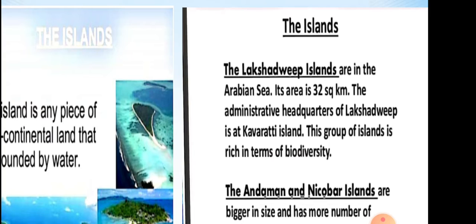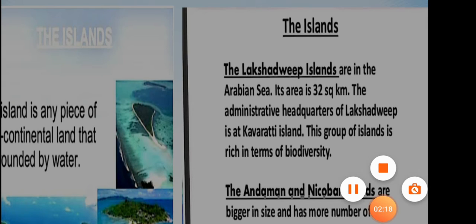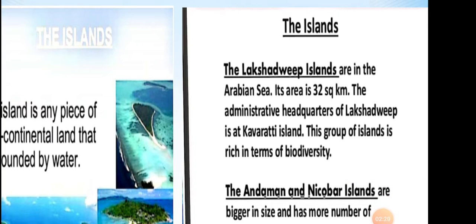It has a total of 36 islands. The island group was formerly known as Laccadive, Minicoy, and Amindivi islands, but from 1973 it was given the name Lakshadweep. The climate here is very pleasant, and that is why there is great diversity in flora and fauna found here.